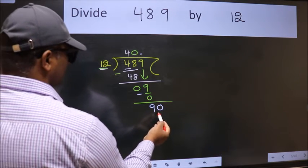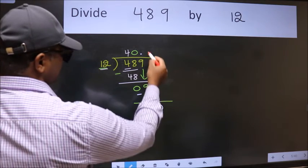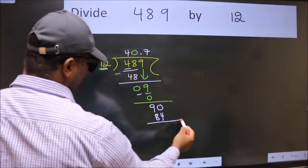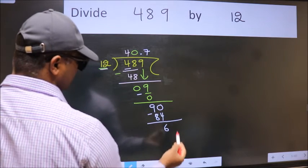So, 90. A number close to 90 in the 12 table is 12 times 7, which is 84. Now we subtract and get 6.